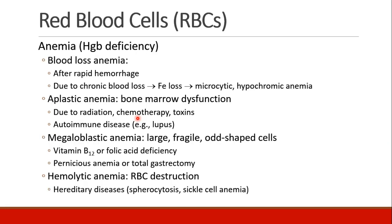There are many different kinds of anemia. Anemia in general usually refers to a hemoglobin deficiency. Patients can have blood loss anemia, which occurs after rapid hemorrhage or due to chronic blood loss. Patients with chronic blood loss may have iron loss and develop microcytic hypochromic anemia, and they may need iron supplementation. Aplastic anemia is a dysfunction of the bone marrow that can occur due to radiation, chemotherapy, other drugs or toxins, or autoimmune diseases like lupus.